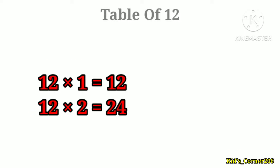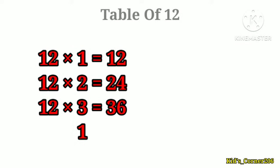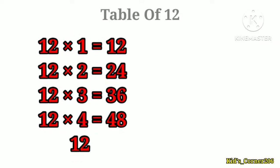Table of 12. 12 ones are 12, 12 twos are 24, 12 threes are 36, 12 fours are 48, 12 fives are 60.